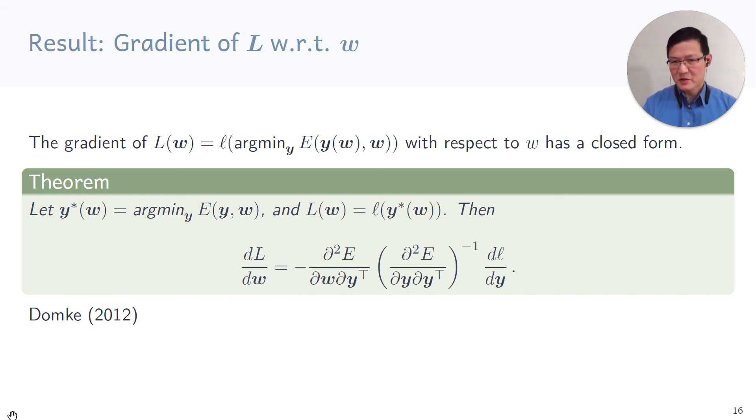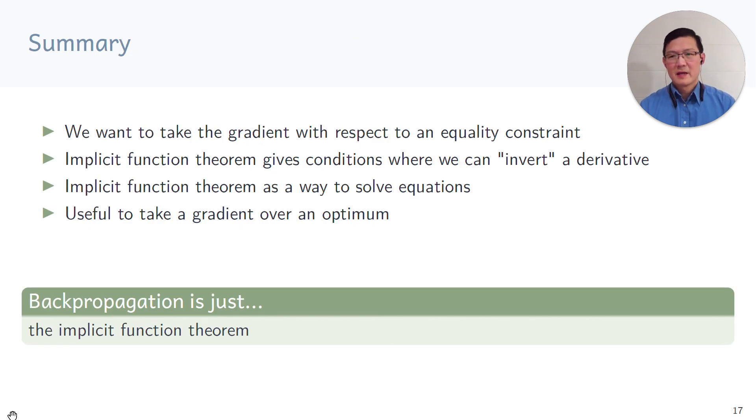And in Justin Domke's paper in 2012, this theorem is presented as well as further ways to use this kind of approach, especially if you cannot solve it in closed form. In summary, we want to take the gradient with respect to an equality constraint and the implicit function theorem gives us a way to do that. It gives us a condition where we can actually invert the derivative. I'd like you to think of the implicit function theorem as an ansatz to solve equations. And it's quite useful to take a gradient over the optimum as we have seen in the small example. So in summary, backpropagation is just the implicit function theorem. Thank you.